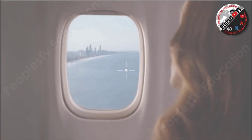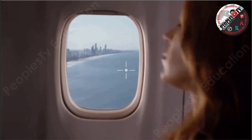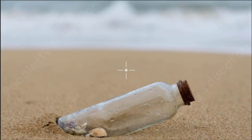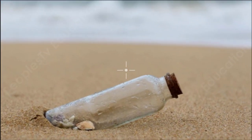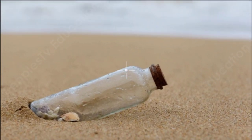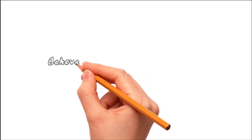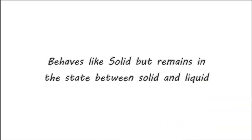Glass is a bit of a riddle. It's hard enough to protect us, but it shatters with incredible ease. It is made from opaque sand, yet it's completely transparent. And perhaps most surprisingly of all, it behaves like a solid material but it's also a sort of weird liquid in disguise.